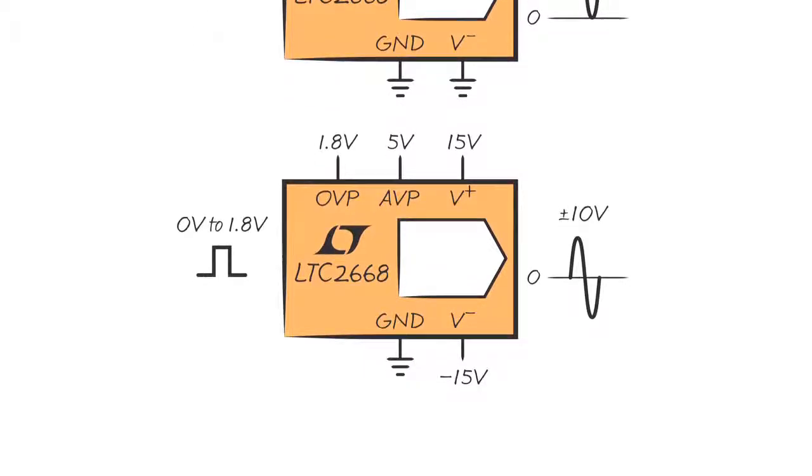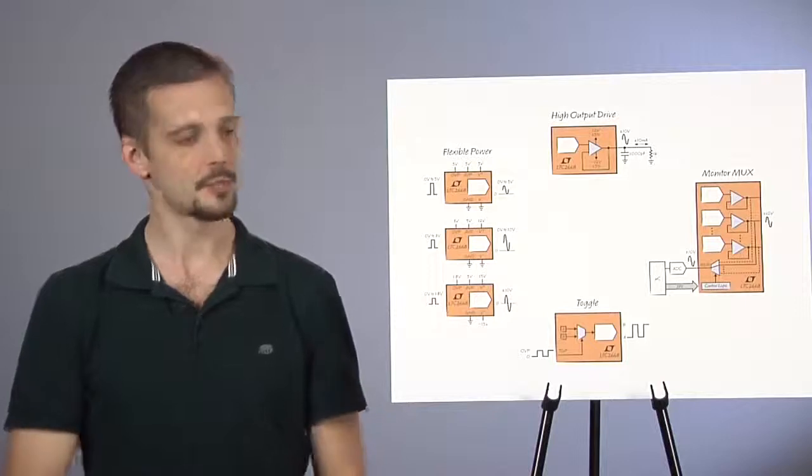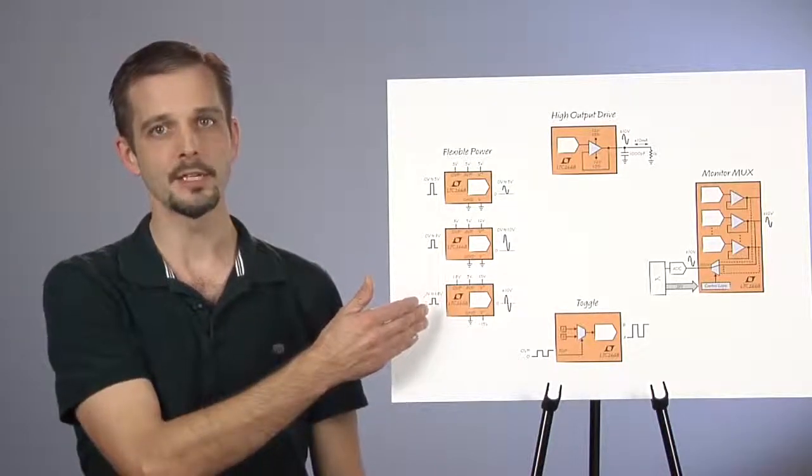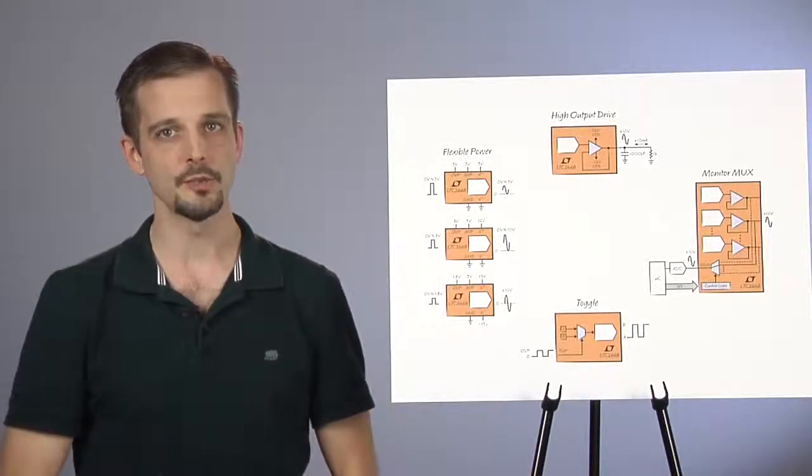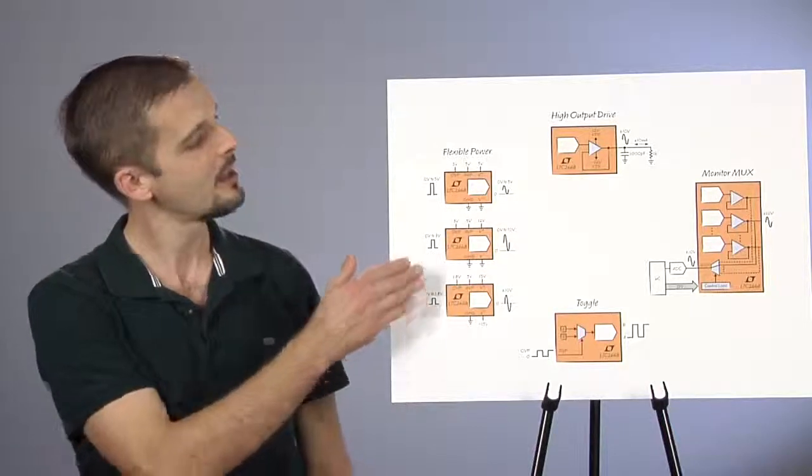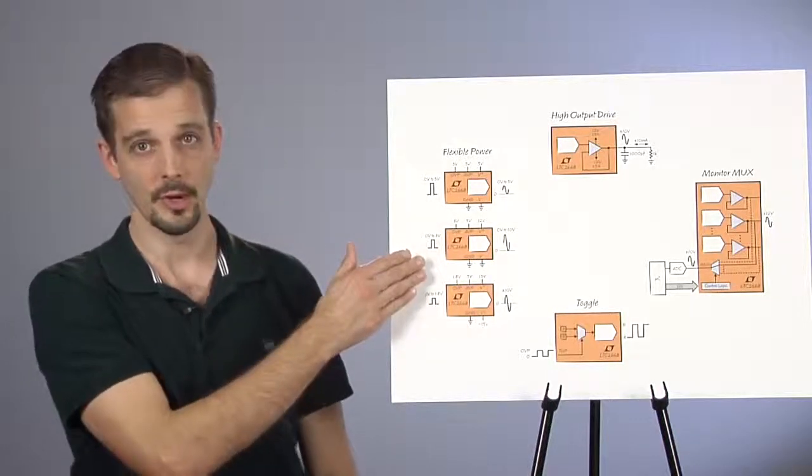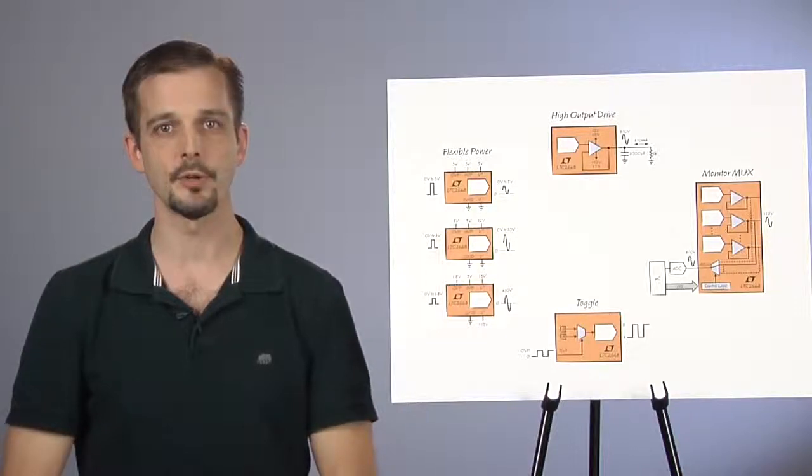A 15V bipolar supply allows the use of all output spans. The digital interface has its own supply pin, allowing a direct interface to modern FPGAs with 1.8V logic levels, 5V microcontrollers, or anywhere in between without level shifting circuitry.